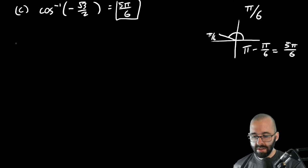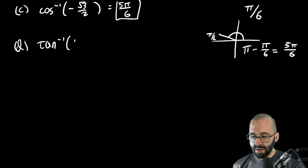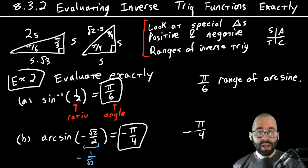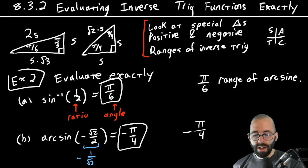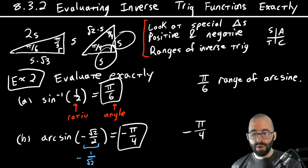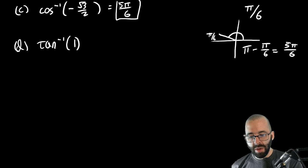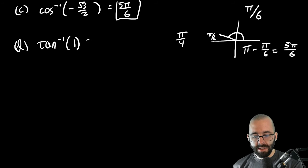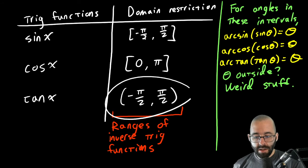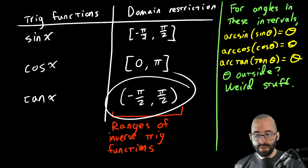Part d: arc tangent of positive 1. Tangent is opposite over adjacent. What angle has opposite over adjacent equal to 1? That's pi/4. Does pi/4 give the right sign? Yes — it's in the first quadrant, so it's positive. And pi/4 is in the range of inverse tangent. So pi/4 is our answer.